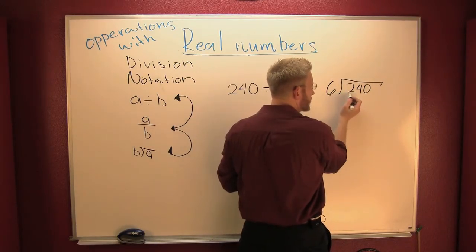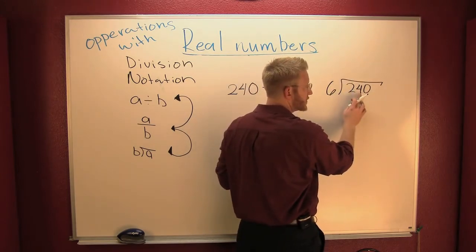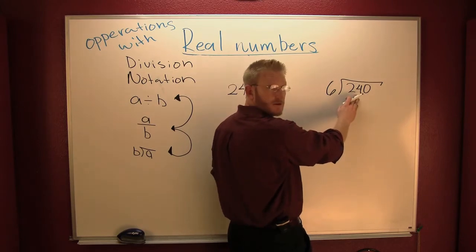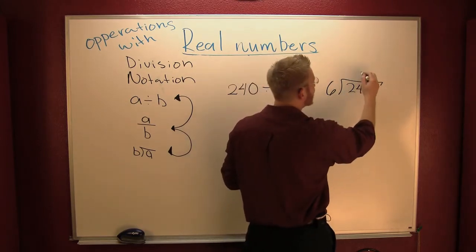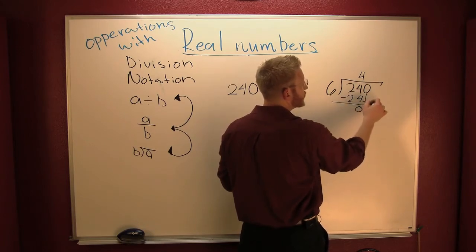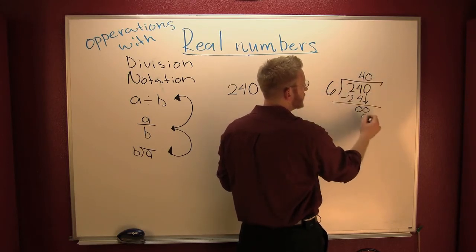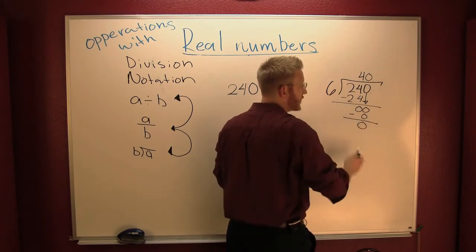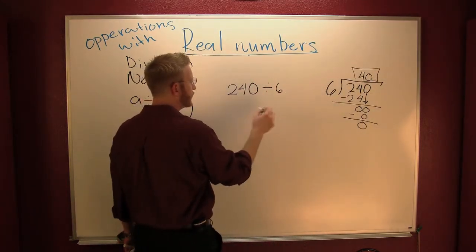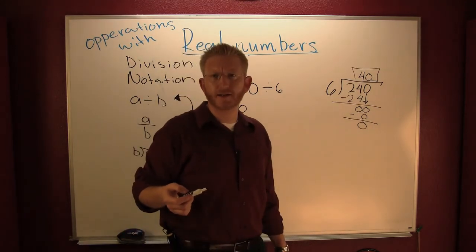Six goes into two how many times? It doesn't — move on. Six goes into twenty-four how many times? What I'm asking is: what do I multiply six by to get twenty-four? Four. So four times six is twenty-four. Change the sign, add down, you get zero. Then you drop that zero. How many times does six go into zero? Zero times. You've reached the end of the number and your remainder is also zero. So we see it's forty — two forty divided by six is forty.